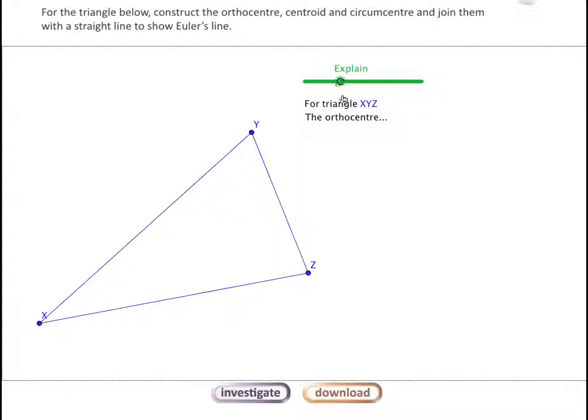The second triangle center is the orthocenter, and we find the orthocenter by dropping a right angle line from each of the vertices down to the opposite side.